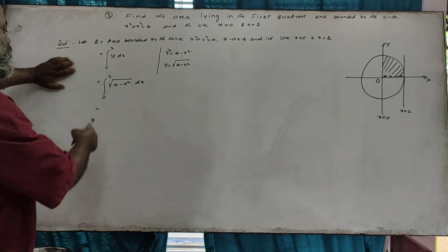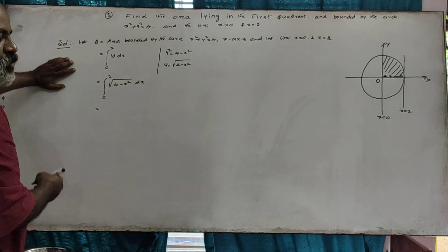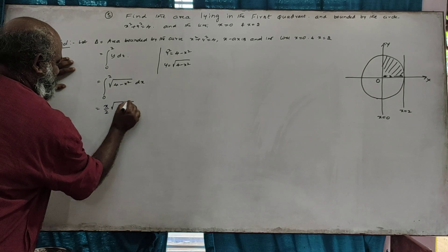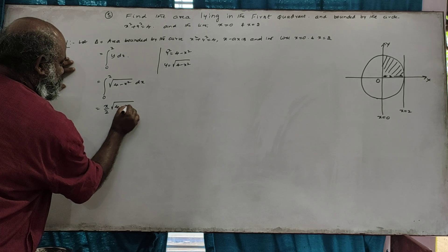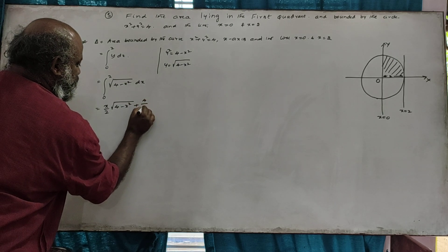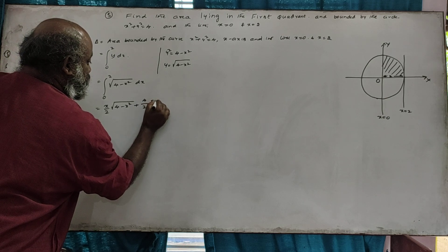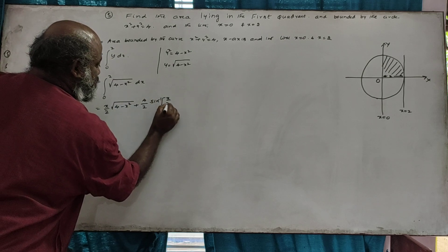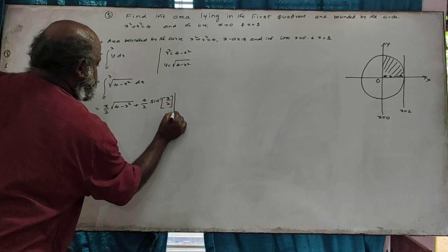This is the form square root of a squared minus x squared dx. The formula is: x over 2 times square root of a squared minus x squared, plus a squared over 2 times sine inverse of x over a.